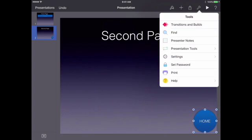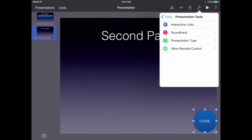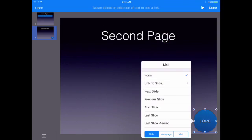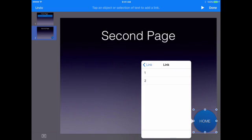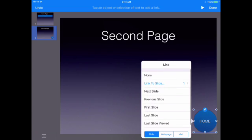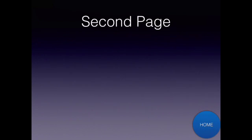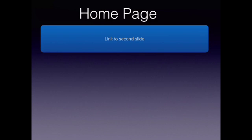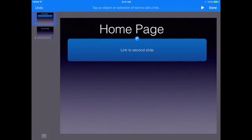Tap the circle, go to Tools → Presentation Tools → Interactive Links, and since this is going to be our home button, we're going to link it to the first slide. Now, if I wanted to, I could copy this button — once I've added all this to it, I can copy it, add it to different pages of a longer presentation, and it will always link back to the home page.